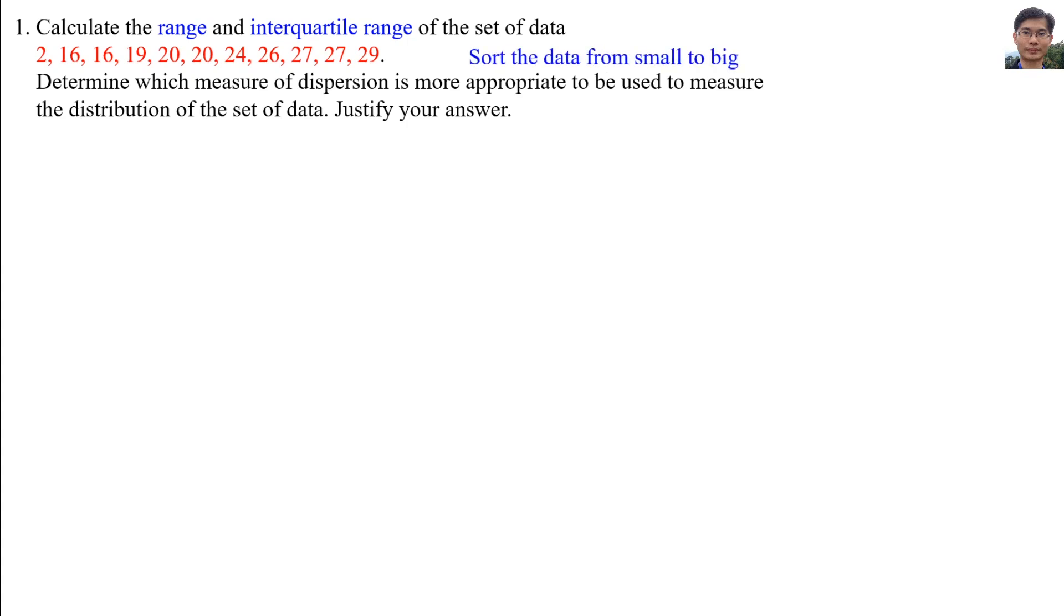Firstly, make sure the data are sorted from small to big. Range is equal to the maximum value, 29, minus the minimum value, 2. So range equals 27.